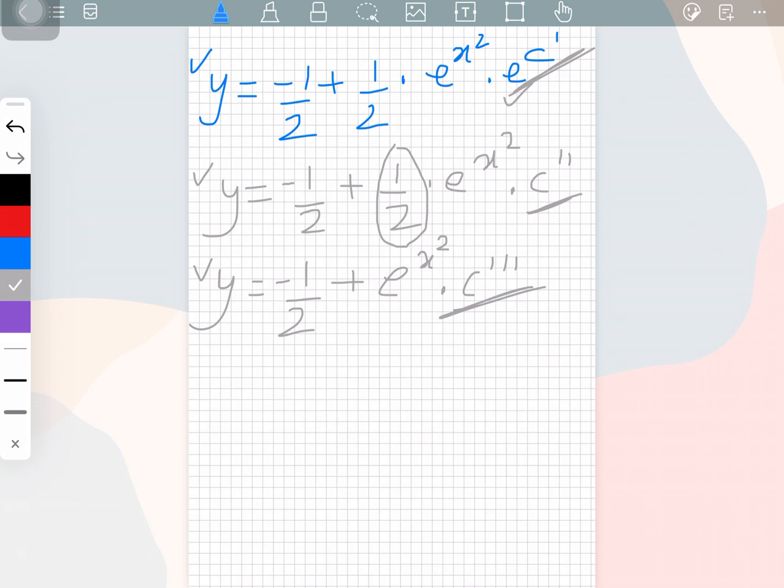Therefore, y is equal to minus 1 over 2 plus e to the power x square times k, where k is integrating constant. If you want, you can leave your answer over here or it would be better if you leave it over here as well. But then I did all this to try to match the answer with the way I did in the first video, the previous video. So now we have gotten the exactly same answer.